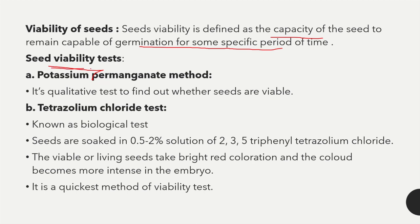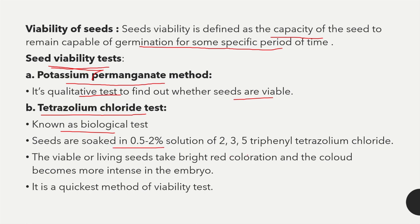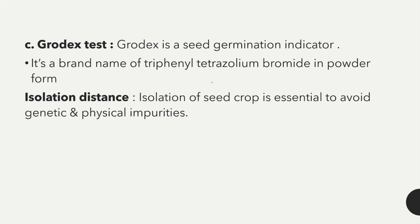Seed viability tests include: first, the potassium permanganate method — a qualitative test to determine whether seeds are viable or not. Second, the tetrazolium chloride test — a biological test where seeds are soaked in 0.5 to 2 percent solution of 2,3,5-triphenyl tetrazolium chloride. Viable seeds take a bright red coloration, more intense in the embryo. This is the quickest method of viability testing.